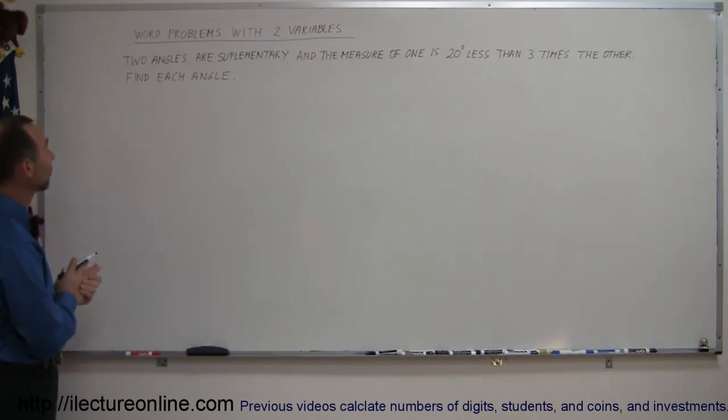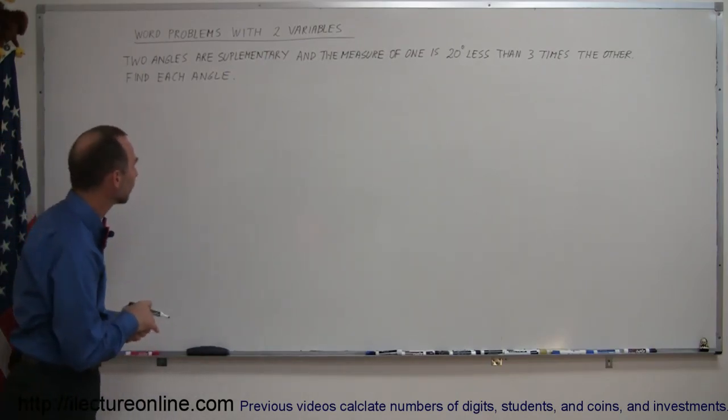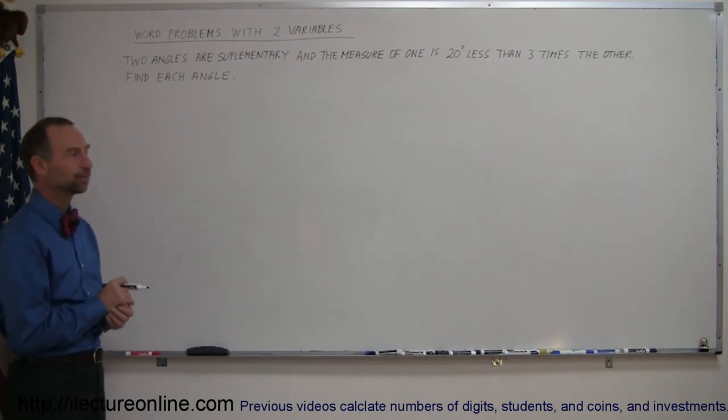Let's read the problem real quick. It says here that we have two angles that are supplementary, and the measure of one is 20 degrees less than three times the other. Find each angle.